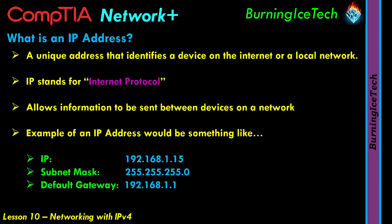The last thing to mention is preferred DNS. DNS — something we'll cover more later — is basically a server that converts names to IPs and IPs to names. That's not the only thing it does; it does much more than that, but in a nutshell DNS converts IPs to names and names to IPs.